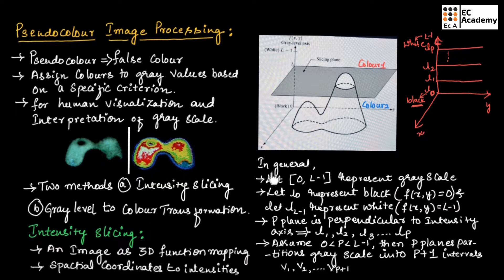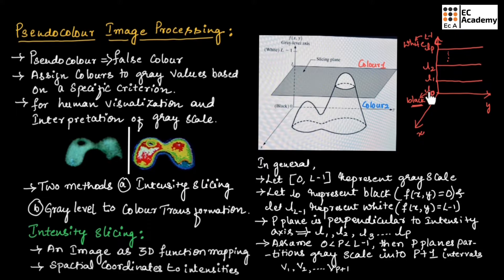In general, intensity slicing can be summarized as: let 0 to L-1 represent grayscale values, where 0 represents black and L-1 represents white. Let L0 represent black where image intensity f(x,y) = 0, and let L-1 represent white where f(x,y) = L-1. Plane P is represented perpendicular to the intensity axis. We take different planes as L0, L1, L2, and so on up to Lp, where P ranges between 0 to L-1. Then P planes partition the grayscale into P+1 intervals, named V1, V2, and so on up to Vp+1.